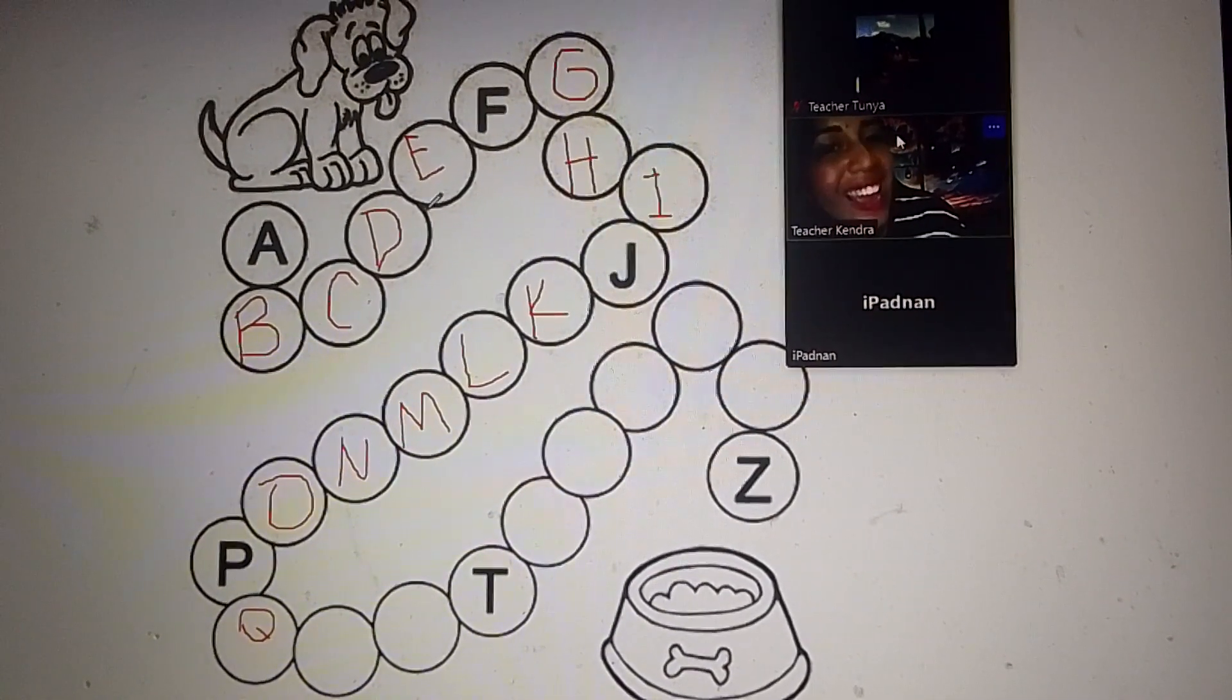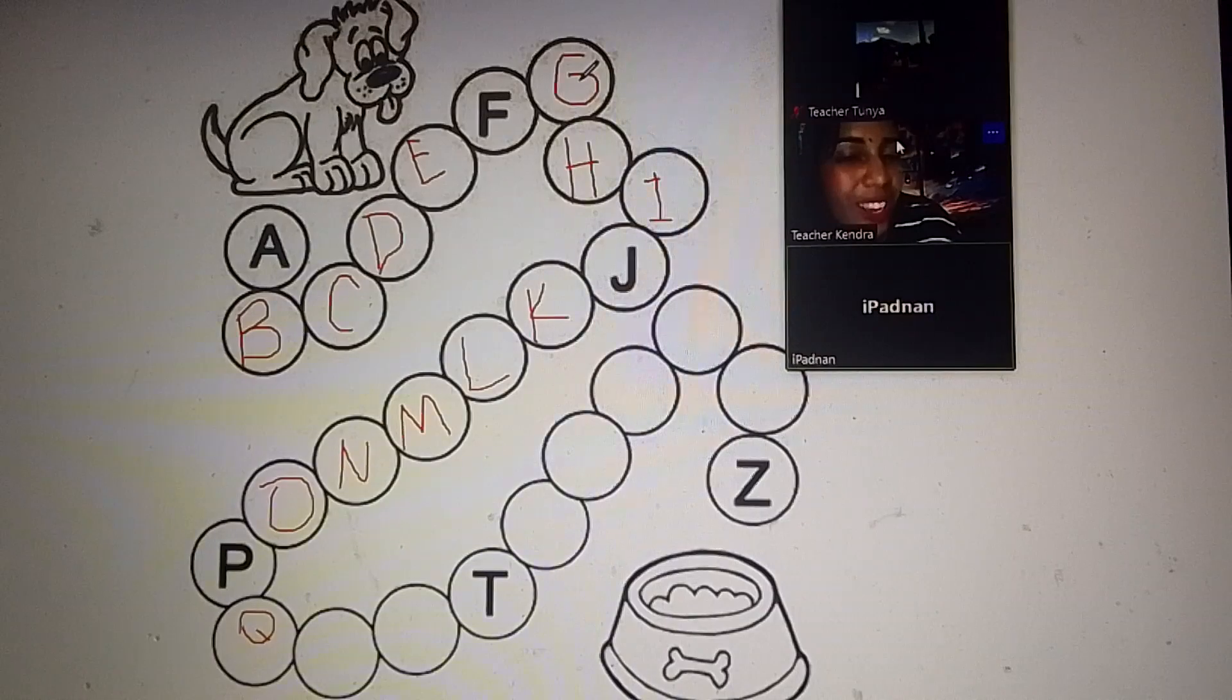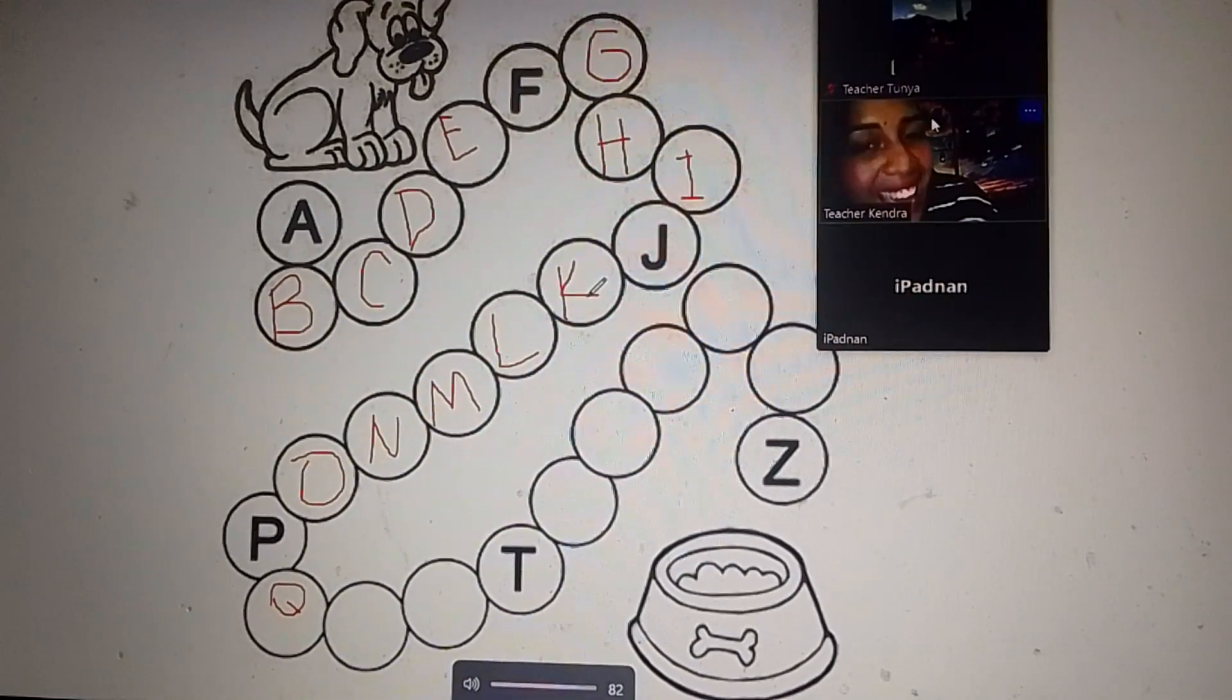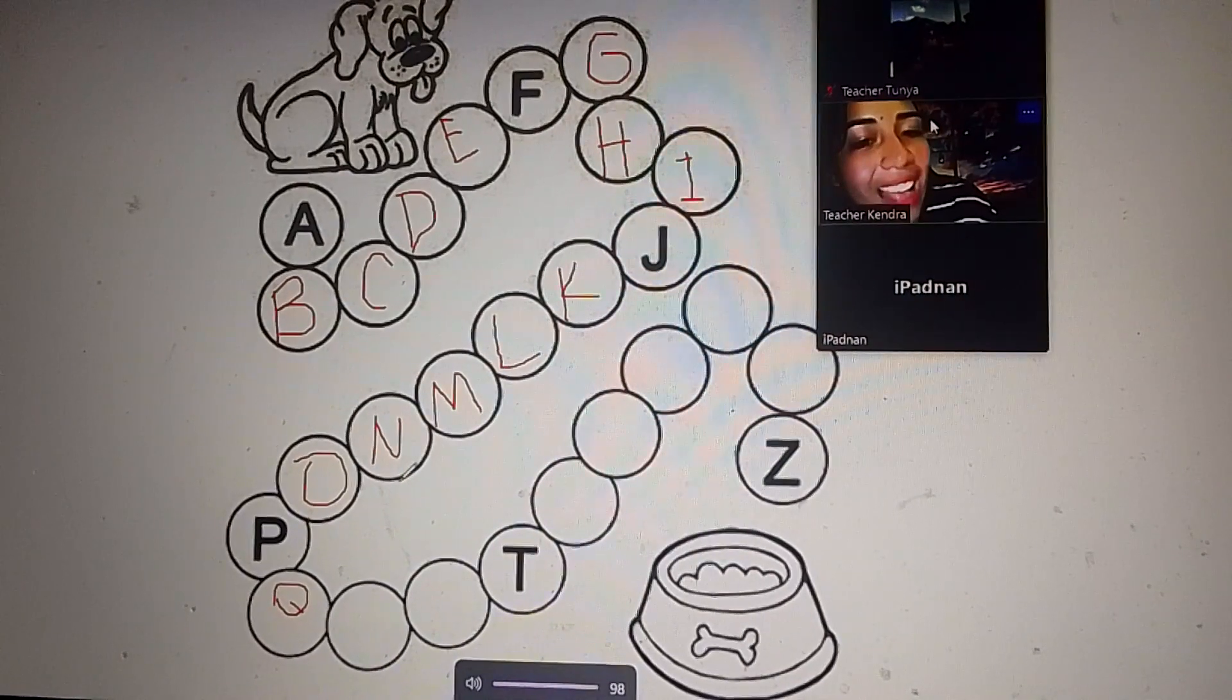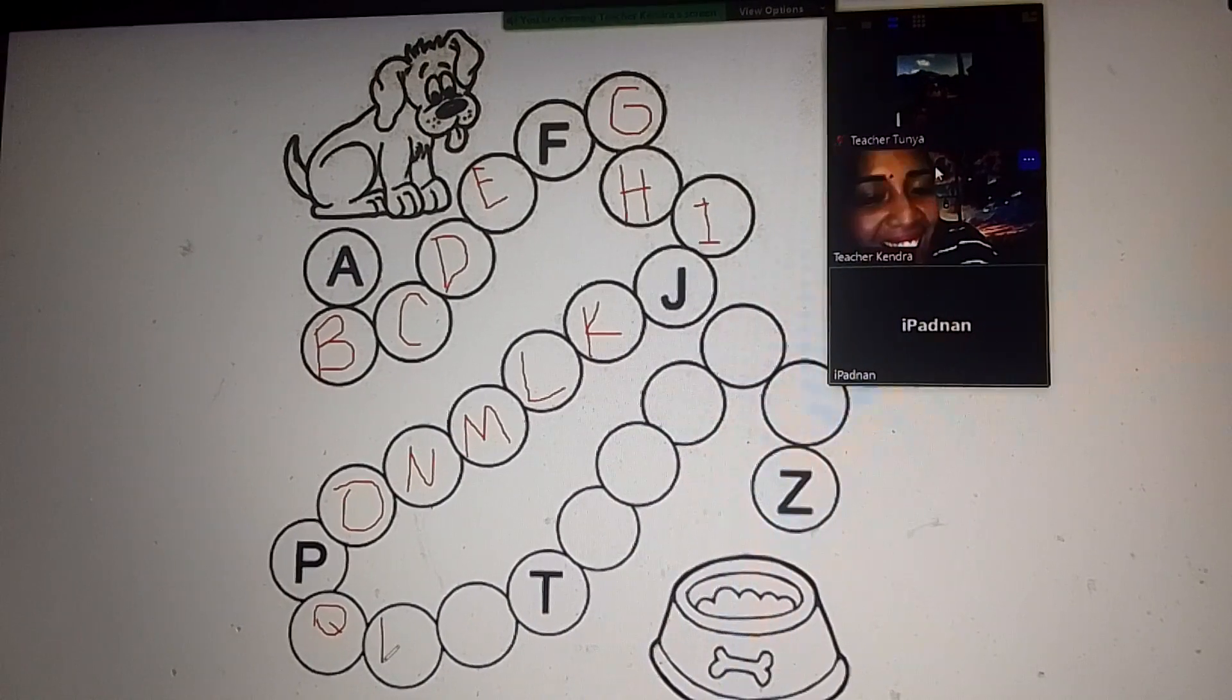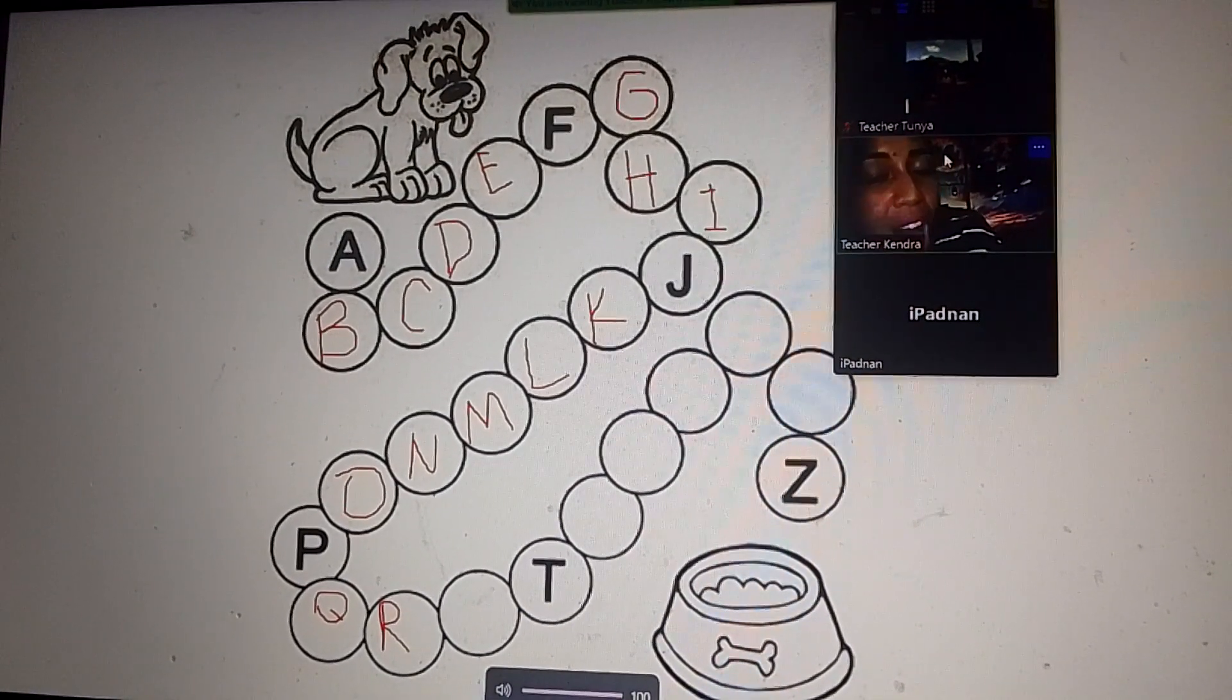A-B-C-D-E-F-G-H-I-J-K-L-M-N-O-P-Q. What's next one? R. Very good. Q-R.